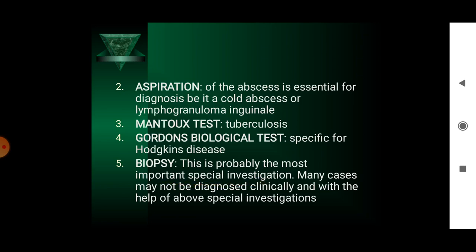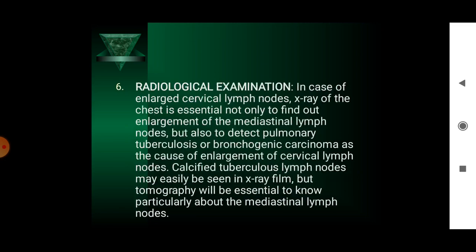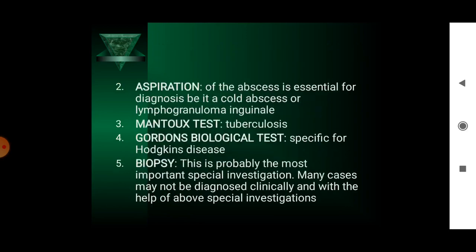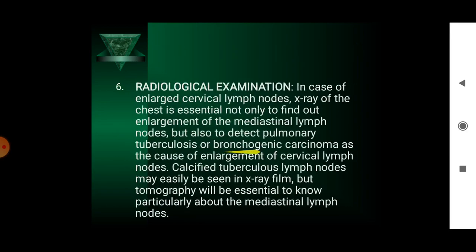Many cases may not be diagnosed clinically or with the help of the above special investigations. Radiological examination in case of enlarged cervical lymph nodes includes X-ray of the chest, which is essential not only to find out enlargement of the mediastinal lymph nodes, but also to detect pulmonary tuberculosis or bronchogenic carcinoma. Calcified tuberculosis lymph nodes may easily be seen on X-ray film, but tomography will be essential to know particularly about mediastinal lymph nodes.